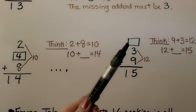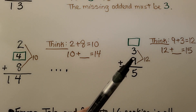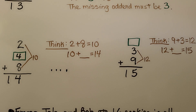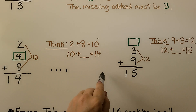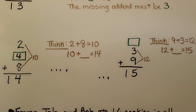Here we have an unknown addend plus three plus nine is equal to 15. We think nine plus three is equal to 12, so 12 plus some number is equal to 15. We can start at 12 and count on: 13, 14, 15 — that's three. The unknown addend is three. Three plus three plus nine is equal to 15.